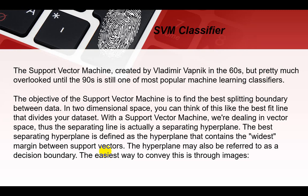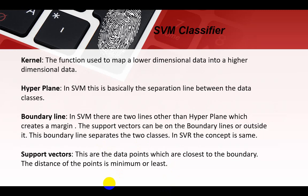The hyperplane may also be referred to as the decision boundary. The easiest way to convey this is through images. Before going to the image, we have to understand four important points, because on the basis of these four points we are working on the Support Vector Machine. We have also studied in support vector regression, where the same concept is working.